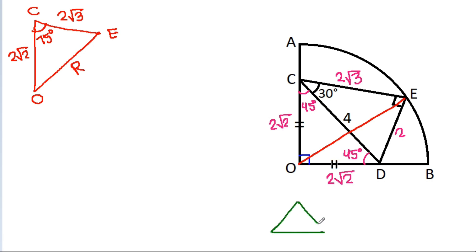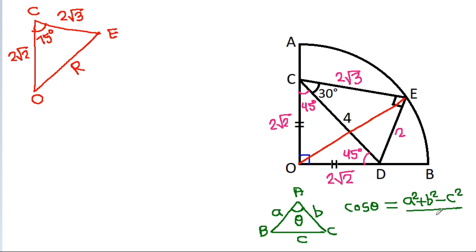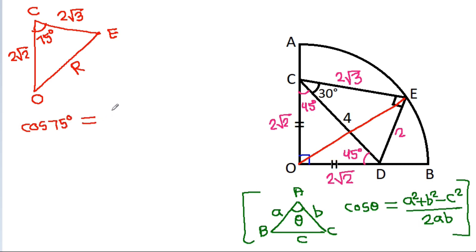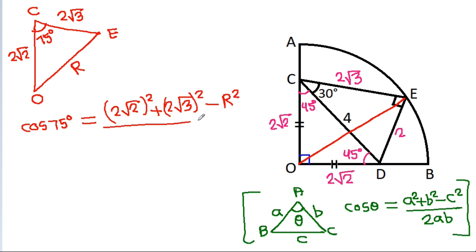In a triangle with sides a, b, c — where AB = a, AC = b, BC = c — and the angle at A is theta, then cos theta equals (a² + b² − c²) divided by 2ab. Applying this here: cos 75 degrees equals (OC² + CE² − OE²) divided by (2 times OC times CE), which is (2√2)² + (2√3)² − r² over 2 times 2√2 times 2√3.